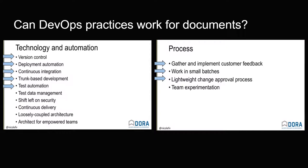Can DevOps practices work for documents? My assertion is that they can. Number one is version control. How do you version control your documents? In my experience, we are heavily invested in the Microsoft Office infrastructure. I would argue Microsoft Office — Word, Excel, PowerPoint — are not inherently configuration manageable, and I see that as a major obstacle. We have to look at different solutions that allow us to institute that number-one leading indicator of high-performing teams in our documentation.